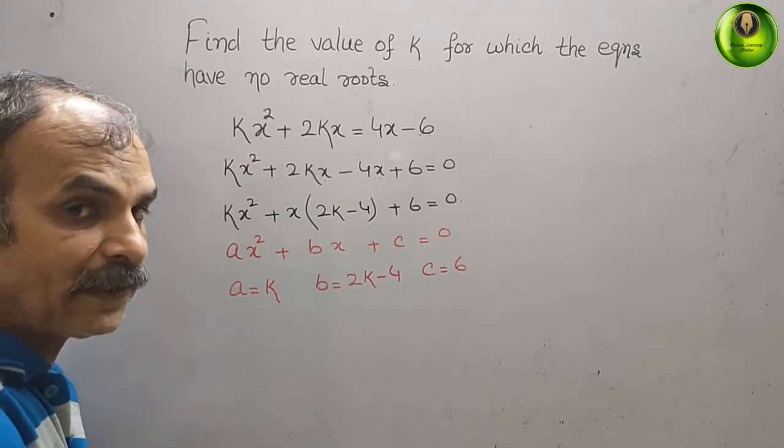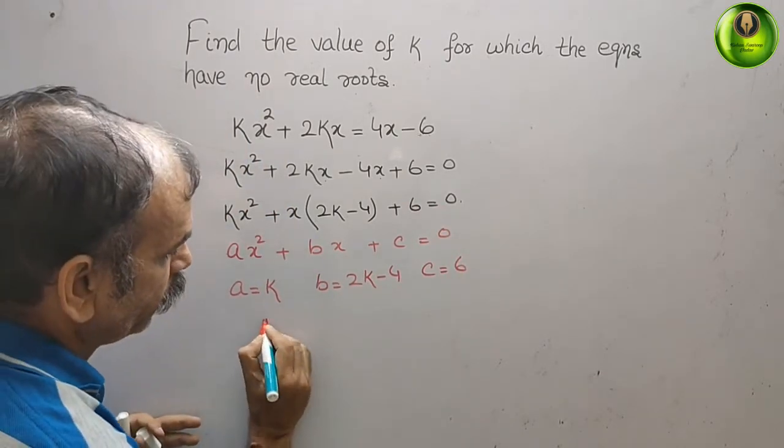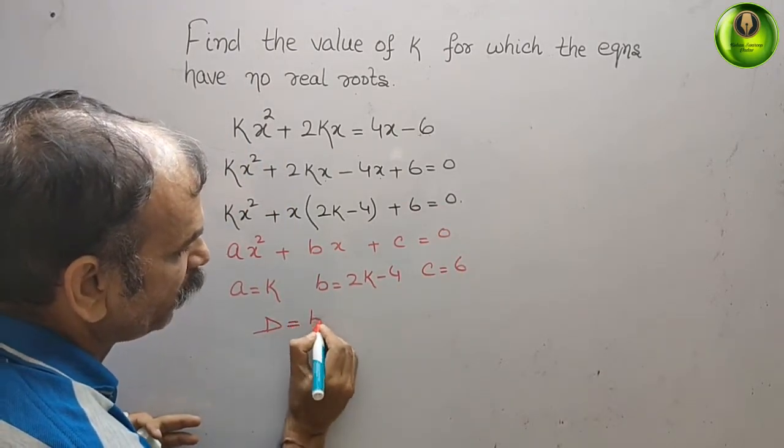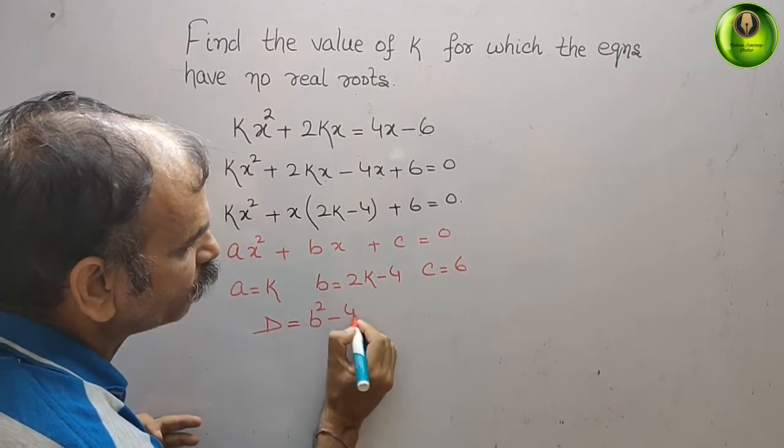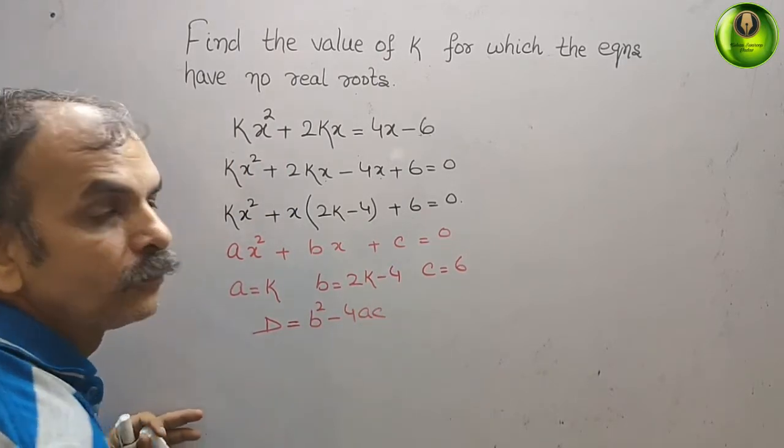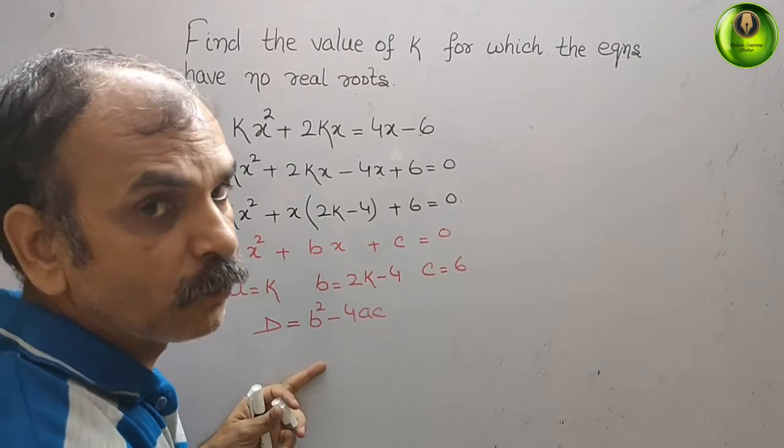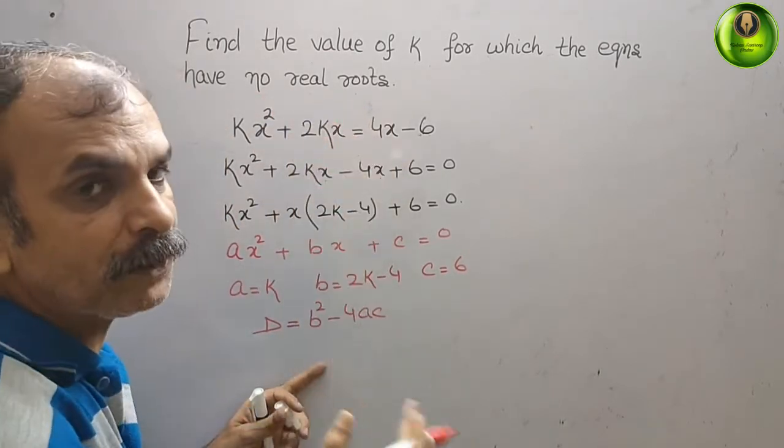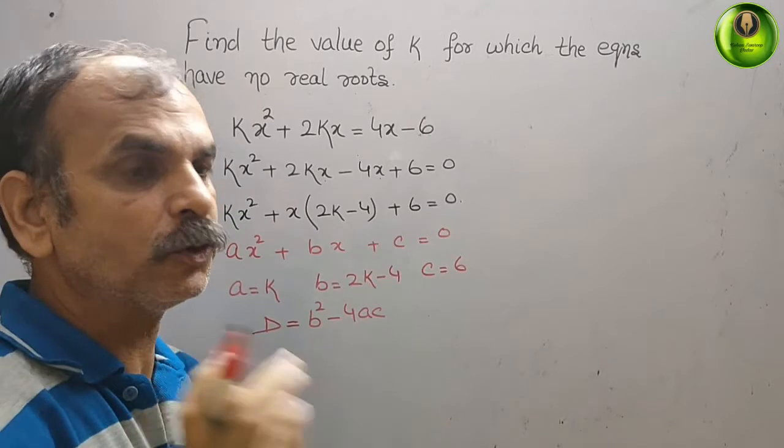Now write the discriminant: D = b² - 4ac. Now see what they have given - no real roots. That means it should be less than 0.